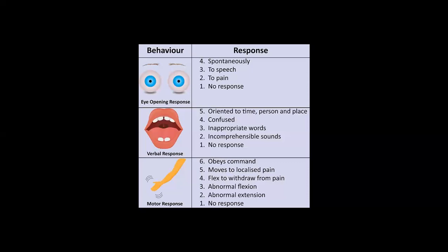If the patient scores 9–12, the patient is in a moderate coma. If the patient scores 3–8 — for example, eye opening is 1, verbal is 2, and hand movement is 2, totaling 5 — this is classified as severe, meaning the patient is in a deep coma.